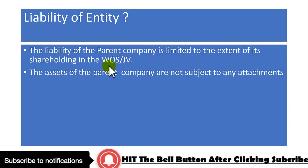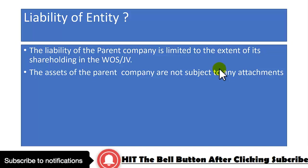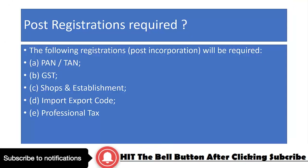Apart from this, regarding the liability of the entity — the liability of the parent company is limited to the extent of its shareholding in the wholly owned subsidiary or joint venture. The assets of the parent company are not subject to any attachment. Compared to a liaison office, branch office, or any other form, this is the best suitable way if you want to set up and explore your business in India.